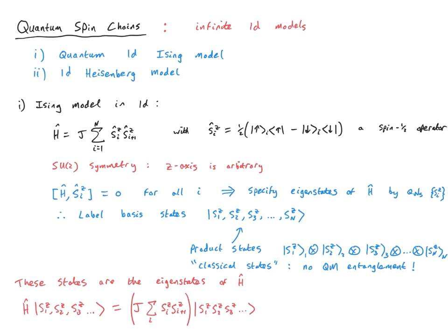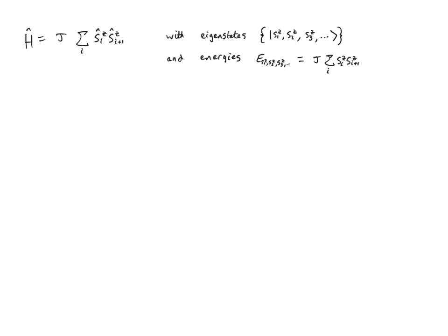We didn't have to do anything to solve the Schrödinger equation. Because all eigenstates of the Hamiltonian are product states, none of the eigenstates have any entanglement at all. We can therefore expect that this Ising model will give us essentially classical physics. So with eigenstates and energies at hand, let's explore some of the physics. We have a Hamiltonian operator in the form of the 1D Ising model, with eigenstates as product states labelled by quantum numbers S1Z, S2Z, and so on, and corresponding energies equal to J times the sum over i of SiZ times S(i+1)Z.